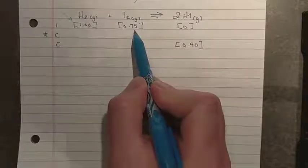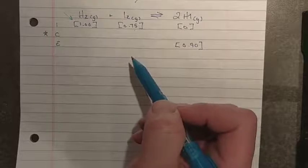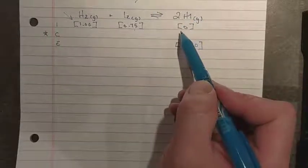For our second one, we have 0.75 moles of iodine placed in a one liter vessel for 0.75. And of course, we would start with nothing in our product. This is our most likely scenario.